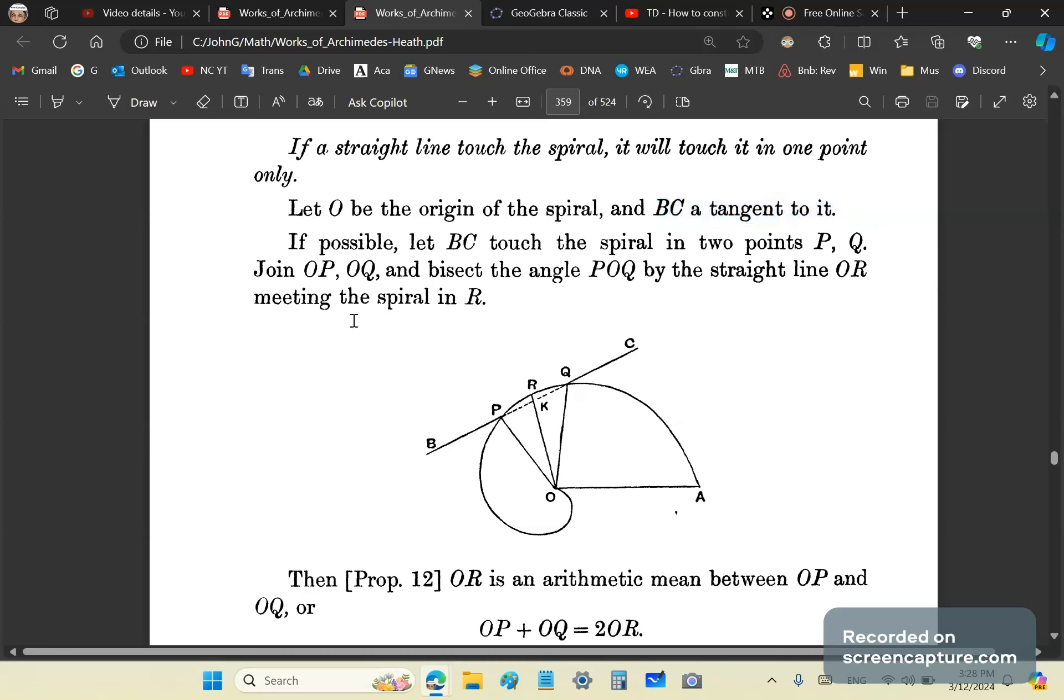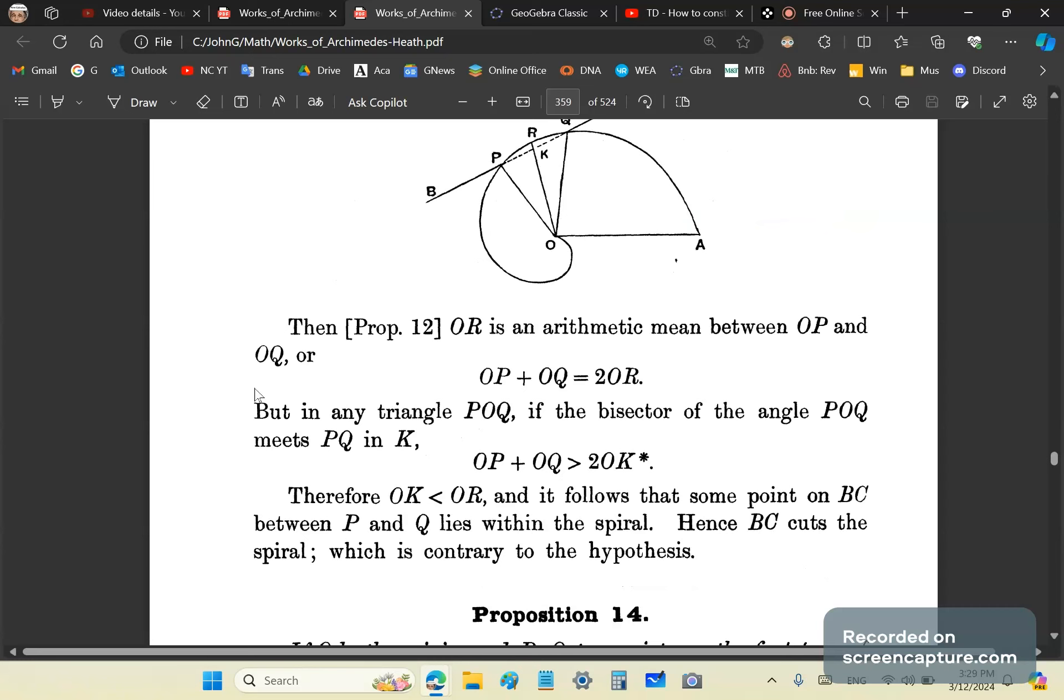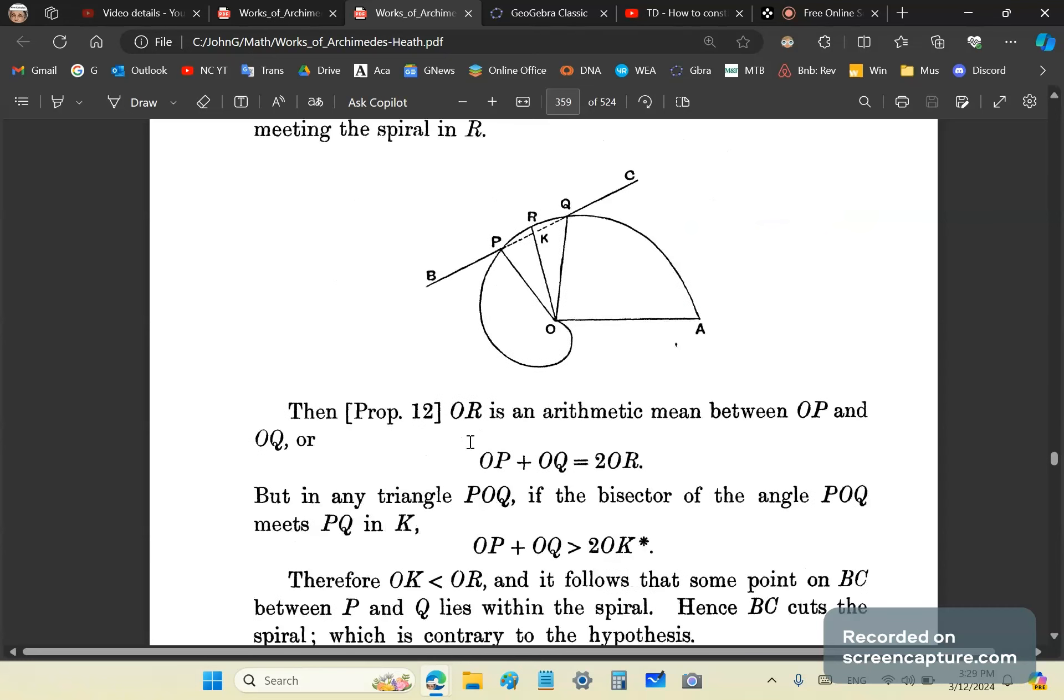If possible, let BC touch the spiral in two points P and Q. Then join OP, OQ and bisect angle POQ with a straight line OR meeting the spiral in R. Then it says something pretty interesting: OR is an arithmetic mean between OP and OQ. Do any of you know why? Stop and think about this. Why would that statement be true?